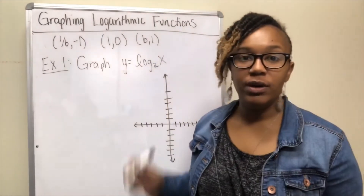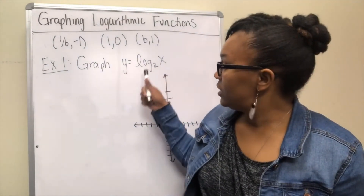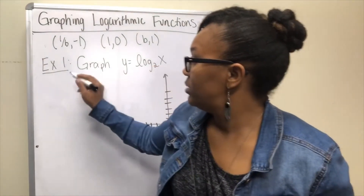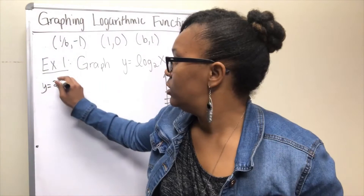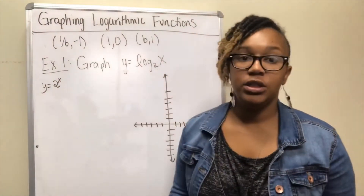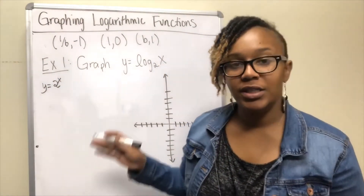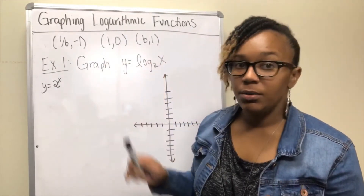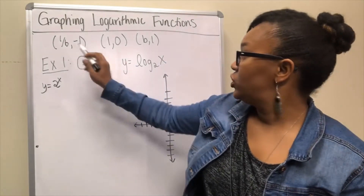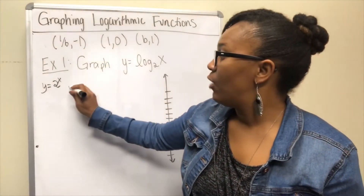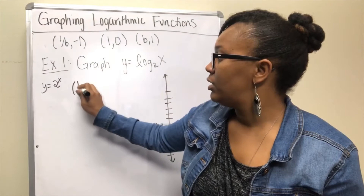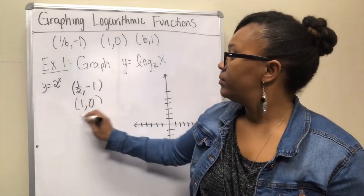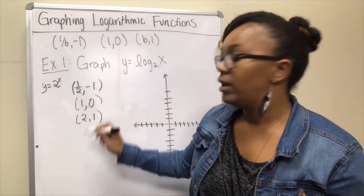For Example 1, we want to graph y = log base 2 of x. This is the inverse of y = 2^x. Using our three key points with base b = 2, the three points on this graph will be (1/2, -1), (1, 0), and (2, 1).